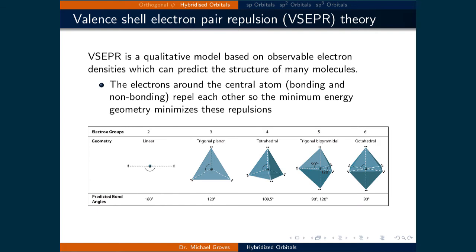Now we will discuss how to predict molecular geometries. Valence-shell electron pair repulsion theory, or VSEPR, is a qualitative model based on observable electron densities which can predict the structure of many molecules. It comes from the idea that the electrons around the central atom repel each other so that they arrange themselves in pairs in a geometry that minimizes these repulsions. All electrons, including those involved in bonding, as well as lone pairs, are considered.